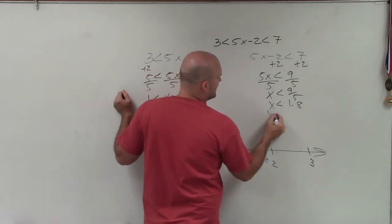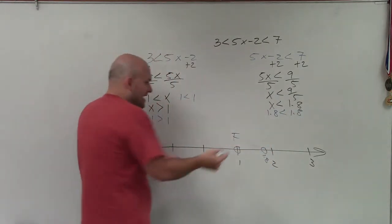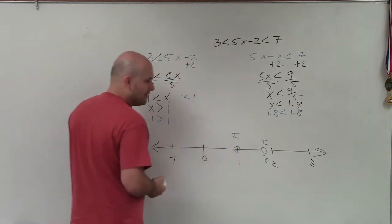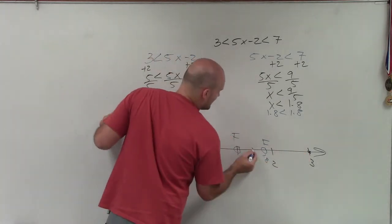Then I test 1.8. 1.8 is less than 1.8. Again, they're equal to each other, so that is false. So we leave them open. Now I just test points to the left, to the right, and in between.